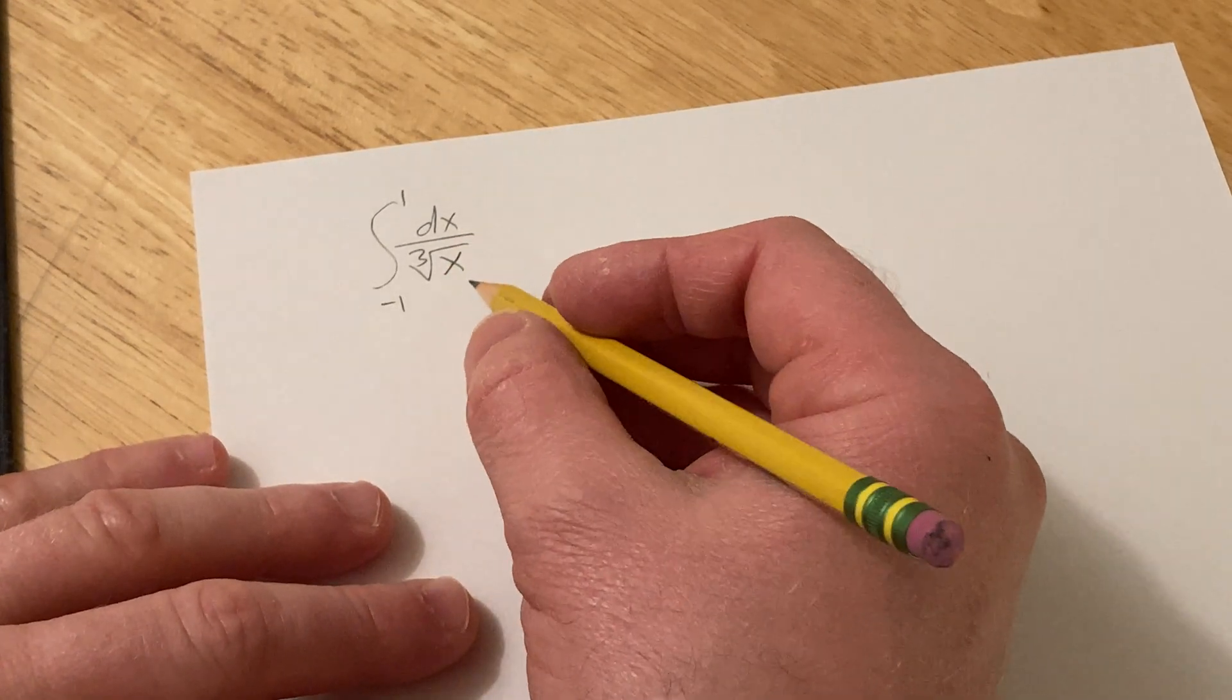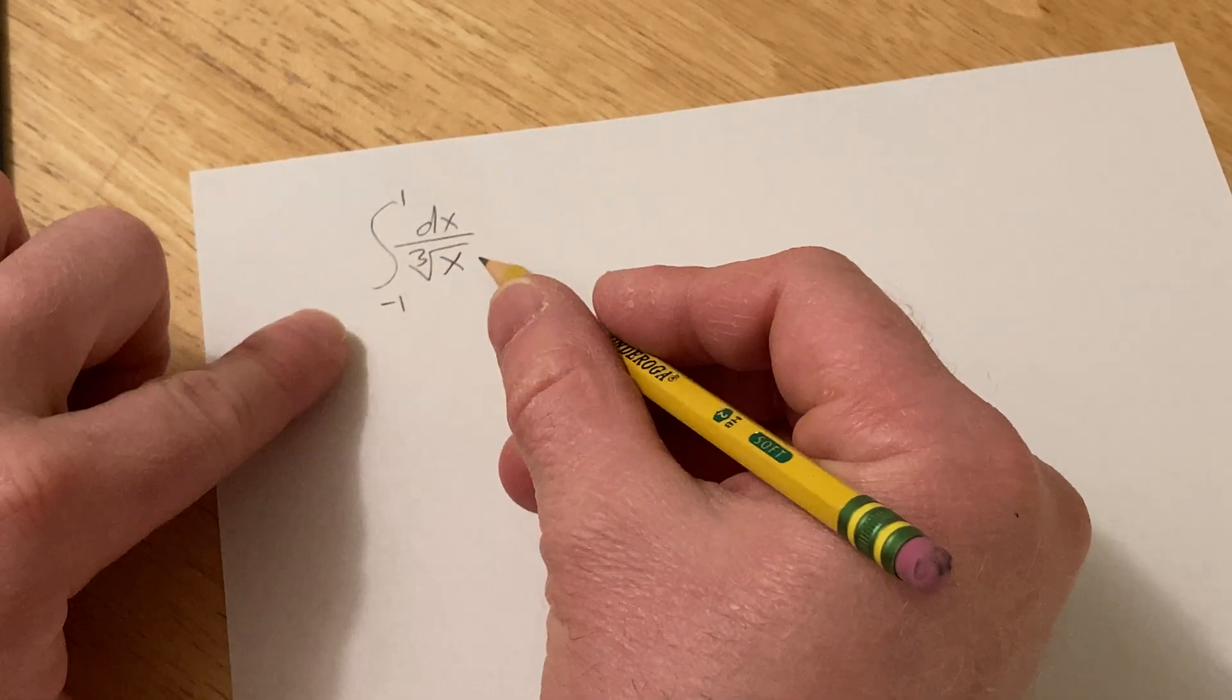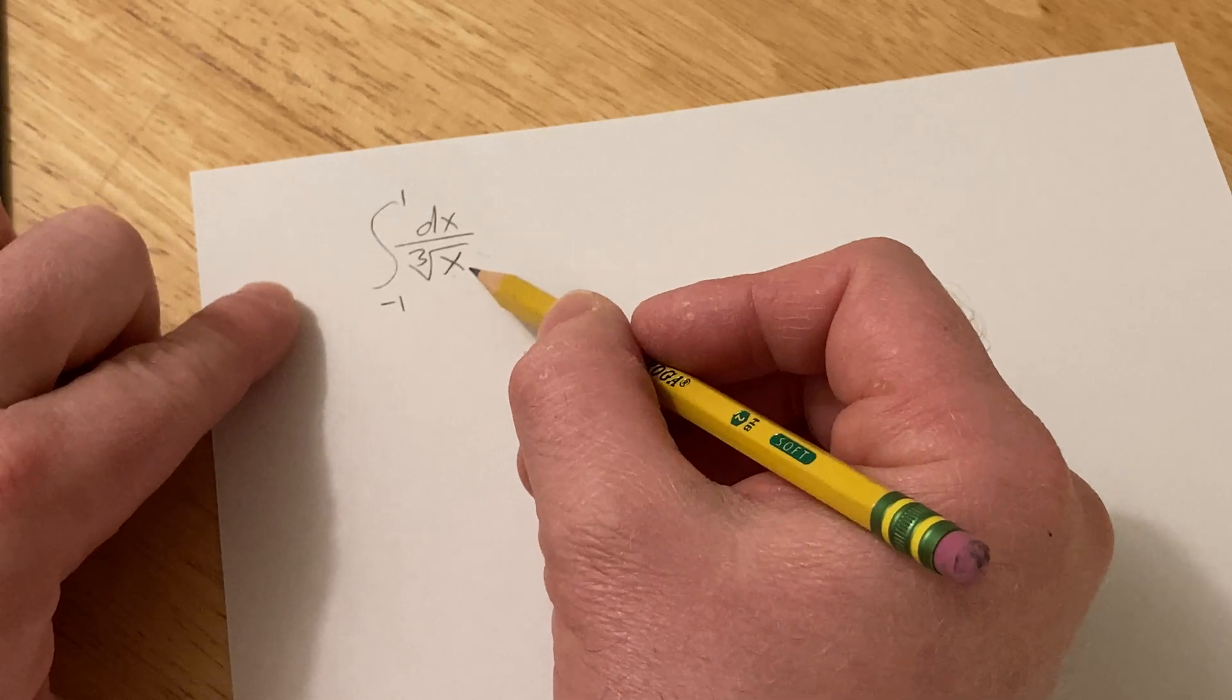Hi, in this problem we're going to work out this integral from negative one to one. We're going to integrate dx over the cube root of x.